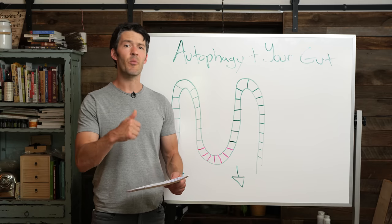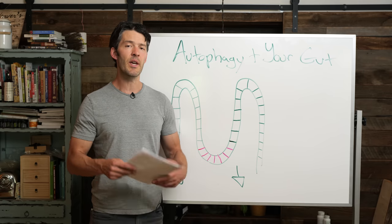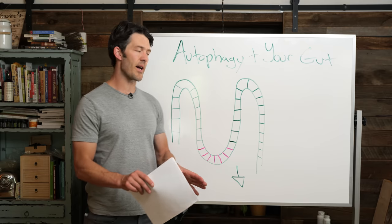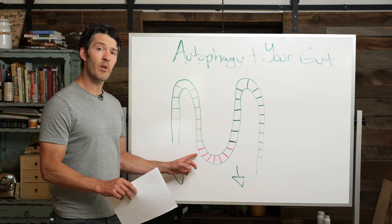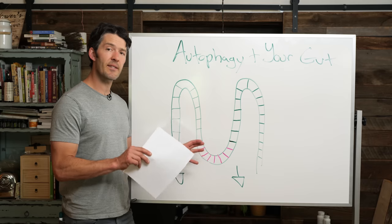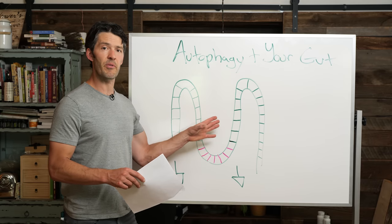When autophagy is downregulated, when you're snacking all the time, if you're not exercising or over-consuming energy, this critical cell type called the Paneth cell, which is responsible for secreting intestinal stem cells that help repair and regenerate your intestinal epithelium, is negatively affected.